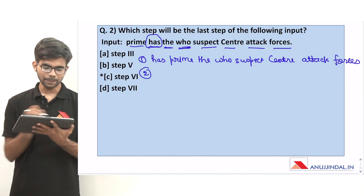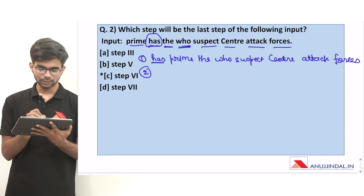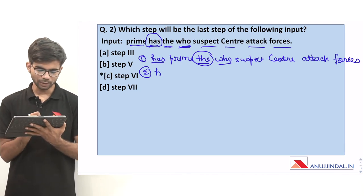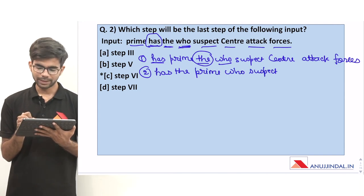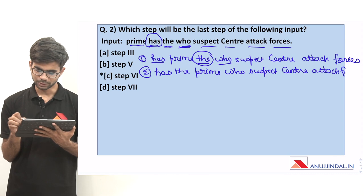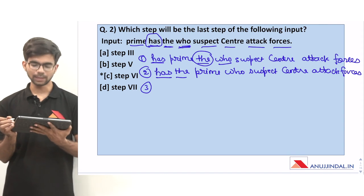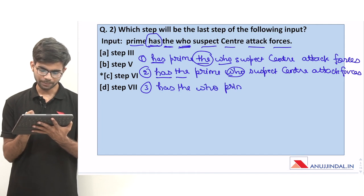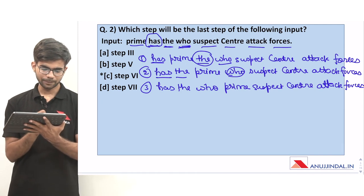For step 2, from the remaining words 'the' and 'who' both have 3 letters, and 'the' comes before 'who' because T comes before W. Step 2 is: has, the, prime, who, suspect, center, attack, forces. For step 3, we have placed 'has' and 'the'; next word will be 'who'. Step 3 is: has, the, who, prime, suspect, center, attack, forces.